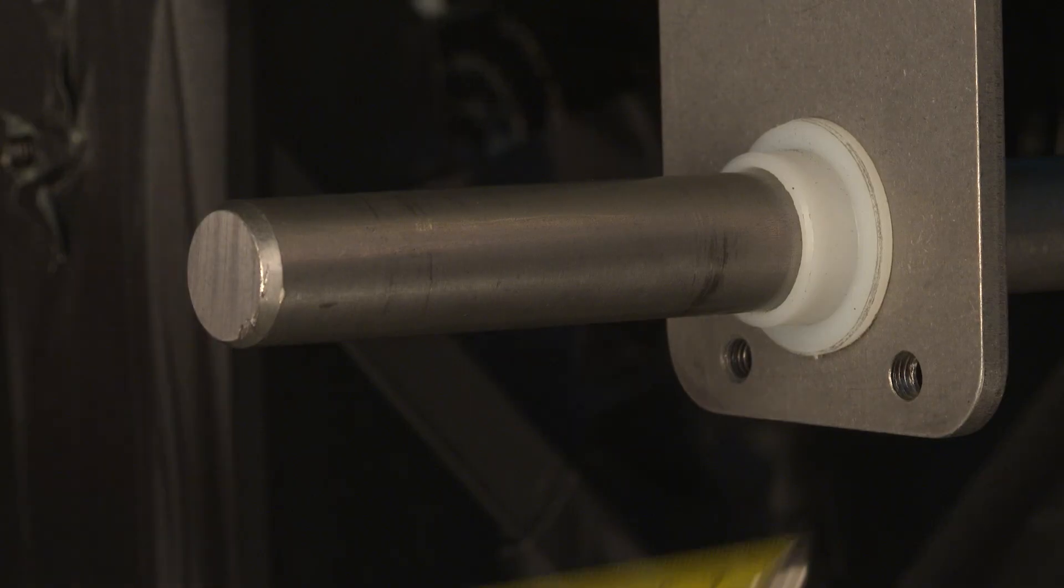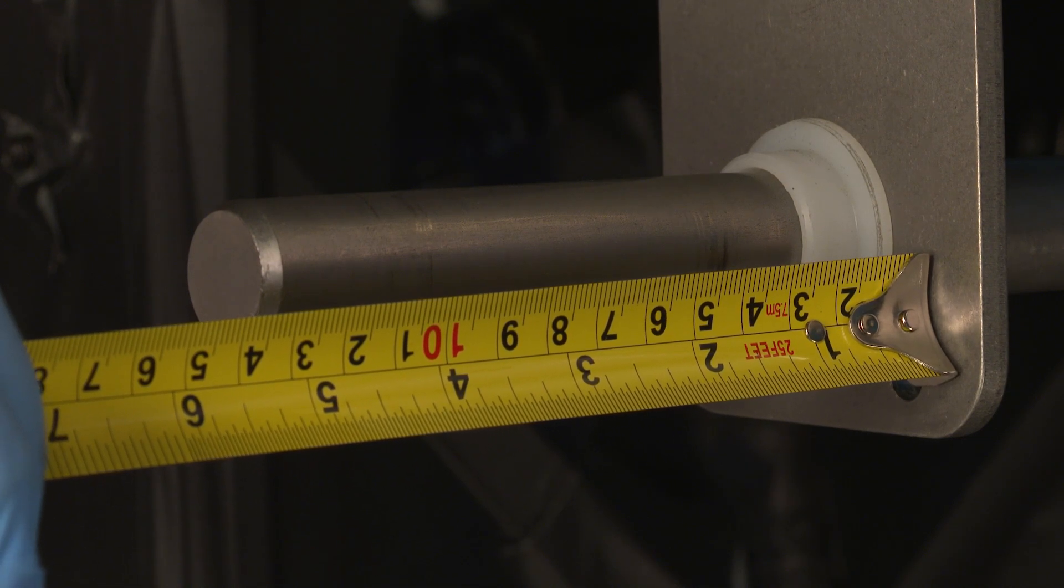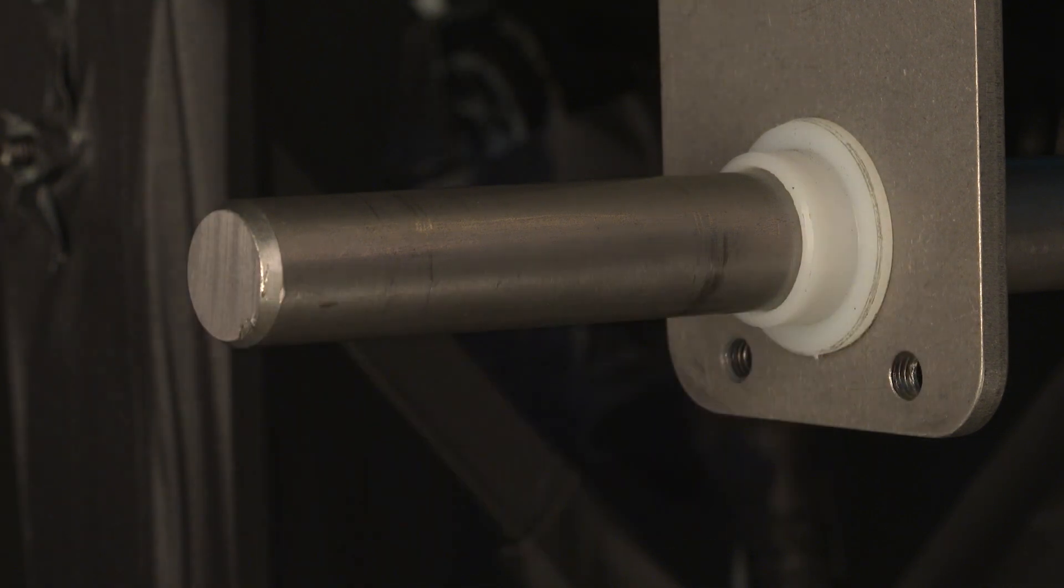Verify that you have 5 to 6 inches, 125 to 150mm of shaft extending past the side plate to accommodate the tension mechanism.